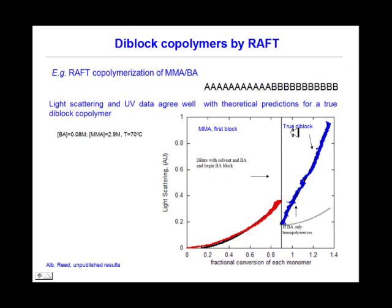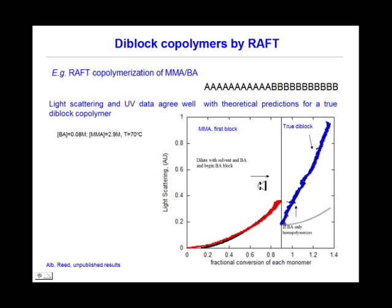Another type of copolymer studied by AECOM is the diblock copolymer, made by RAFT. In this example, a methylmetacrylate first block is followed by addition of butylacrylate monomer which builds the second polymer block. Light scattering data is shown in the graph versus monomer conversion, and you can see that these agree very well with theoretical predictions.